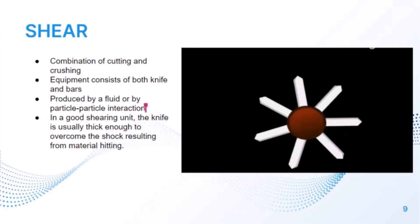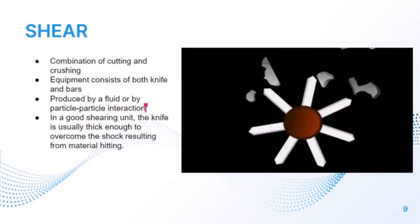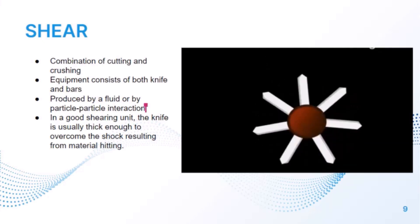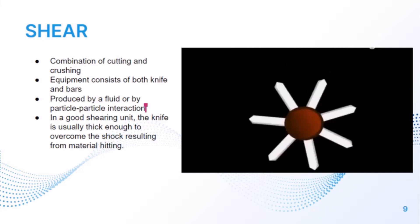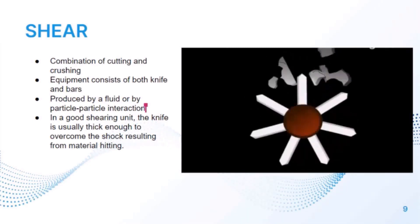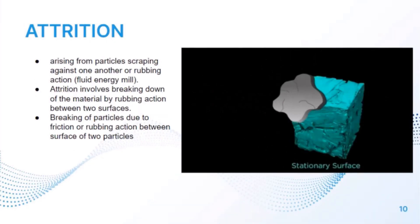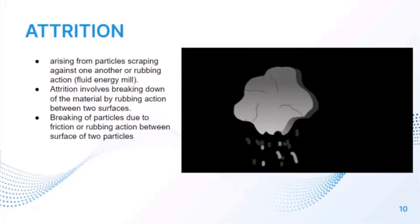The equipment for shear consists of both knife and bars, and is produced by fluid or particle-particle interaction. In a good shearing unit, the knife is usually thick enough to overcome the shock from material impact, and the clearance between the knife and bar should be as small as practicable, with the knife as sharp and thin as possible. Particles produced from shear are finer and smaller compared to cutting.